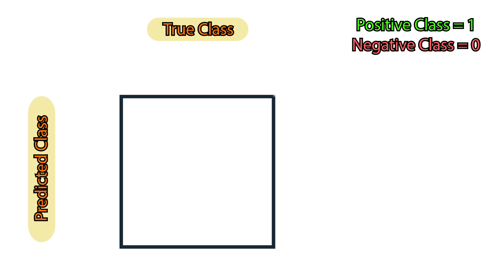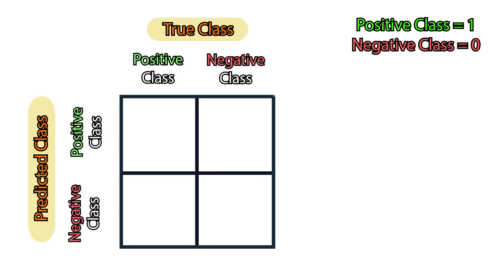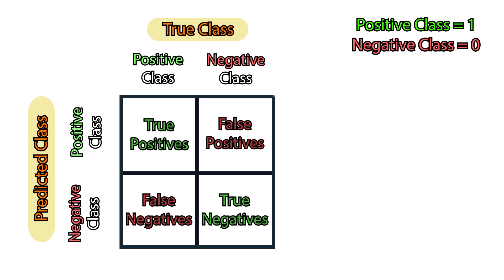Let's call one class positive and the other one negative. We can arrange the predictions in four possible ways: either we predict the positive class correctly, or we predict the negative class incorrectly, and either we predict correctly the negative class, or incorrectly the positive one.